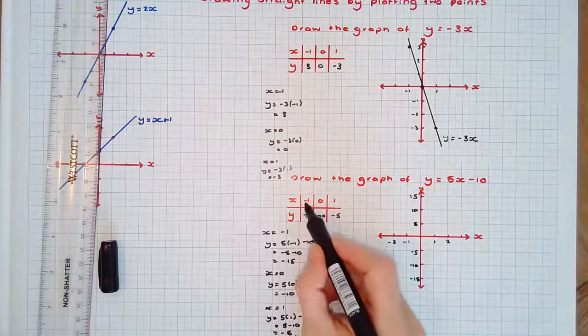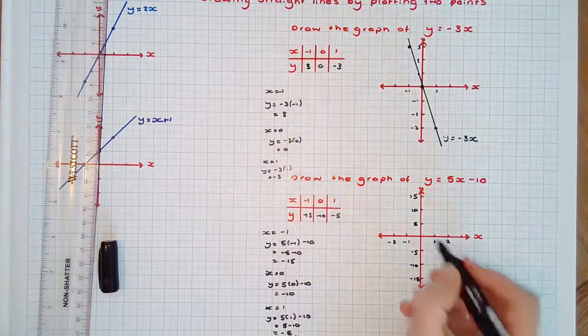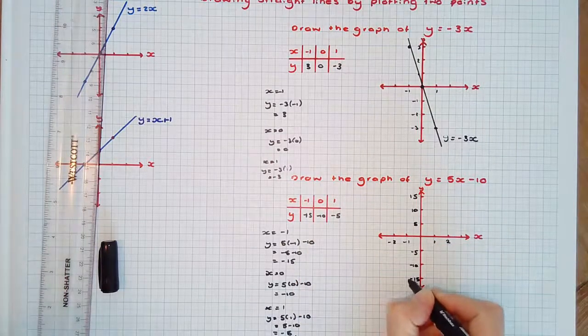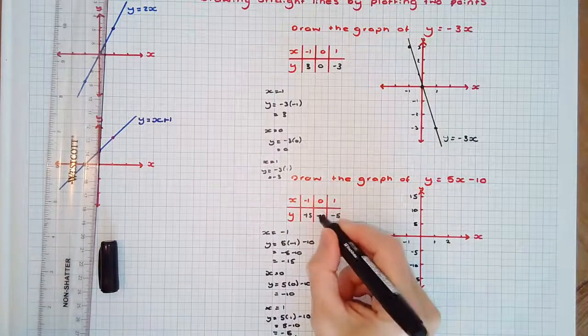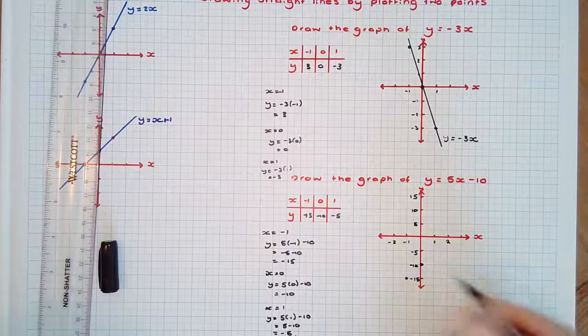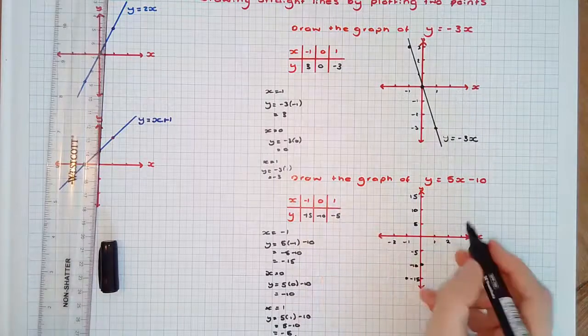Plotting these points: negative 1, negative 15; 0, negative 10; and a third as a check, 1, negative 5.